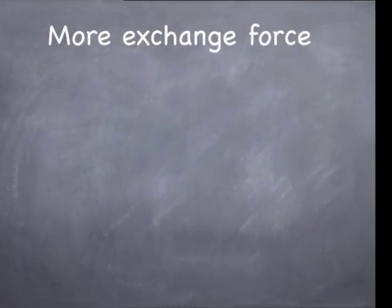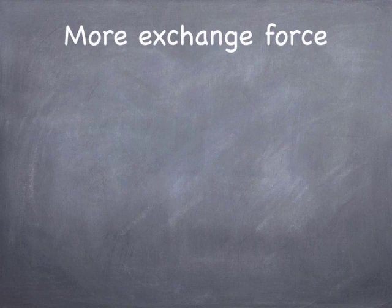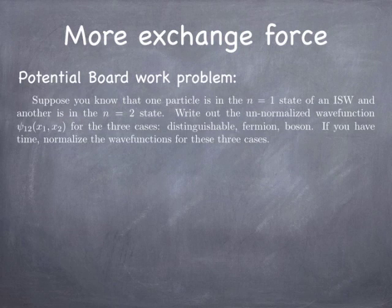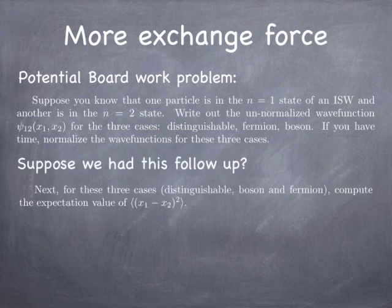The other thing I want to talk about here is the exchange force. We talked about a potential board work problem. We never really did this. This actually is related to a homework problem in the book, where you'd write out the unnormalized wave function for the three cases of distinguishable, fermion, and boson when one particle is in the n equals 1 state and one particle is in the n equals 2 state. That's an interesting problem. It's not that hard to do.